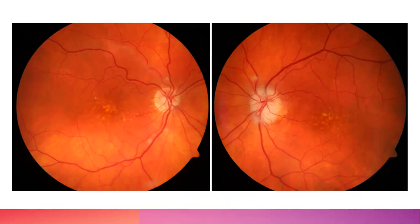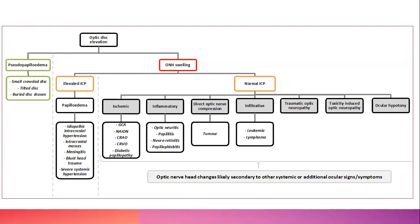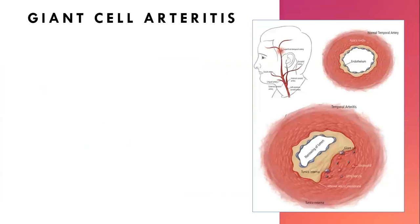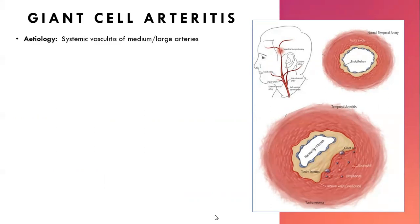GCA is one of the more serious conditions. What it results in is narrowing of the lumen leading to ischemia, which affects the ophthalmic arteries and causes ischemia of the optic nerve head.